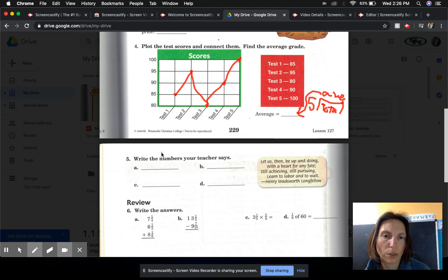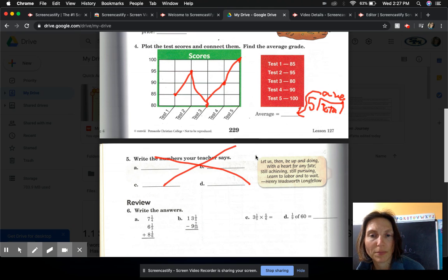Okay, so now it says write the numbers your teacher says. I'm going to cross that off. Let us then be up and doing with a heart for any fate, still achieving, still pursuing, learning to labor and to wait. Henry Wadsworth Longfellow. So I think that's appropriate for the times now.